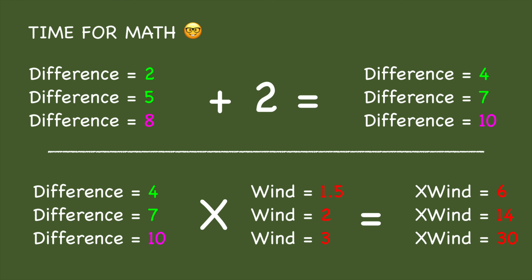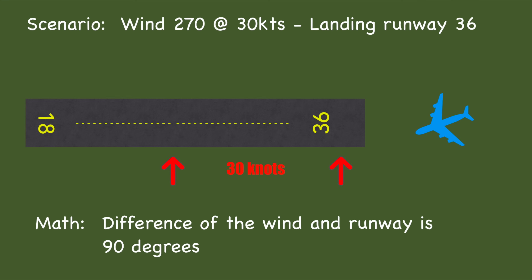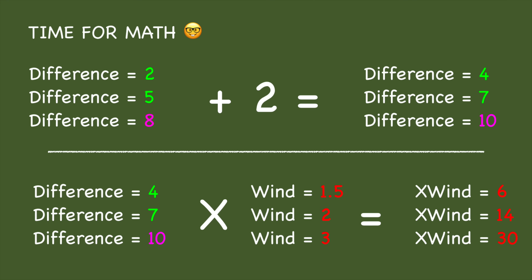Let me explain why I have 8 in purple. If you're 80 degrees off the tip of your wing — or 90 degrees, or even 100 degrees — it's essentially a direct crosswind. When I do the math in my head and I see it's 80 degrees off the tip of my wing, I don't even need to do the math. I just use whatever that wind speed is as my crosswind component. If you're landing runway 36 and the wind's coming from 270 at 30 knots, it's a 30-knot crosswind — no math needed. So if it's 80, 90, or even 100 degrees, just use the wind speed directly as your crosswind component. From 70 degrees and less, that's where you start to do the math.